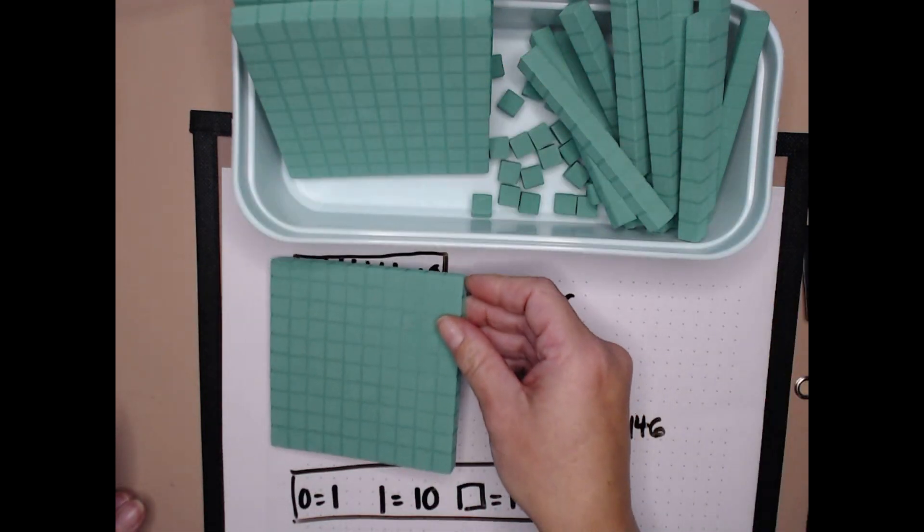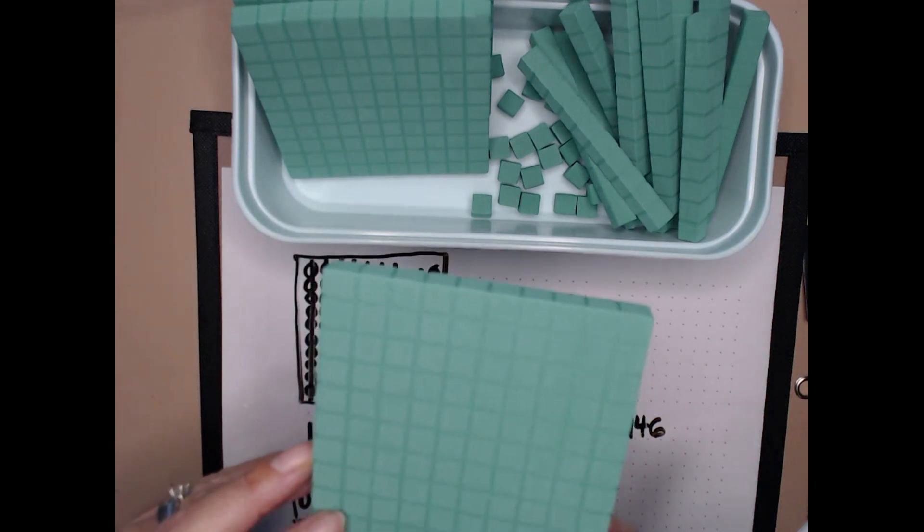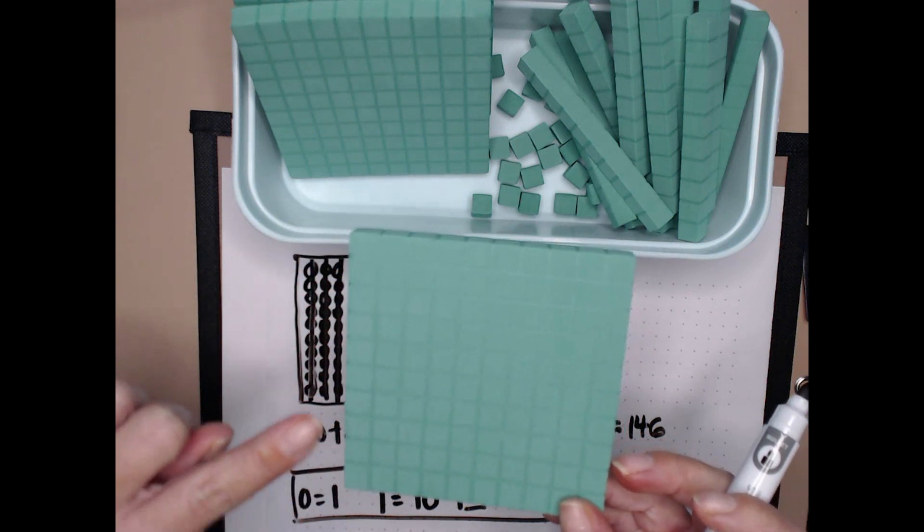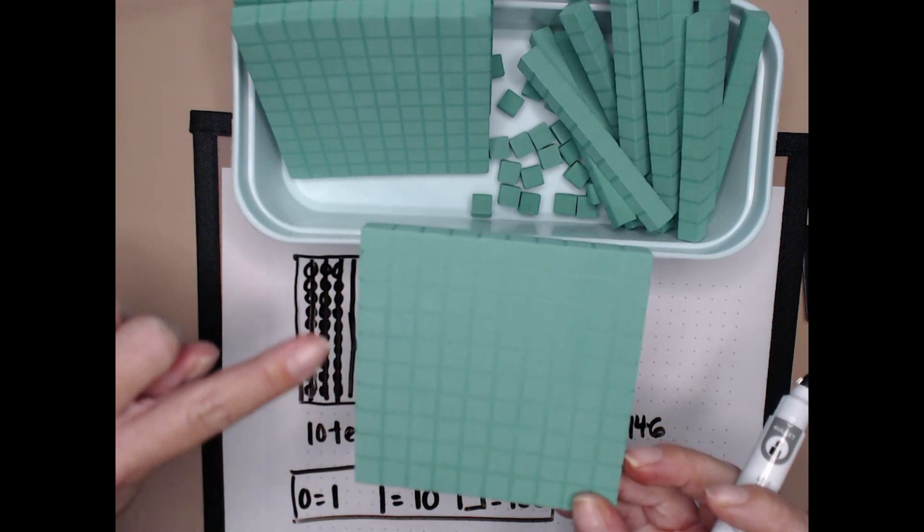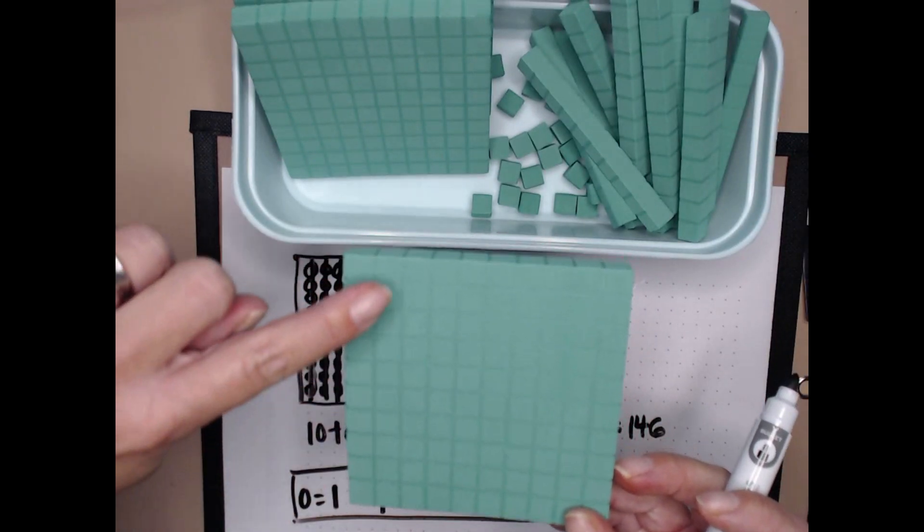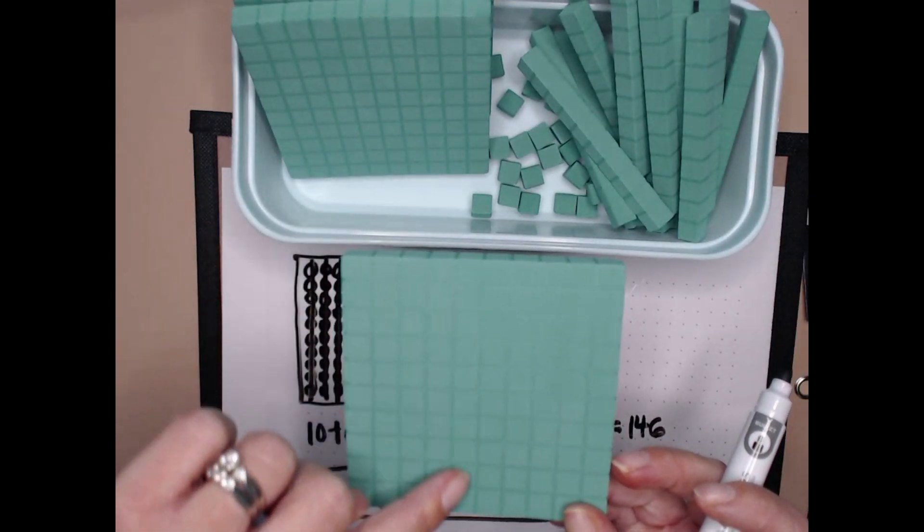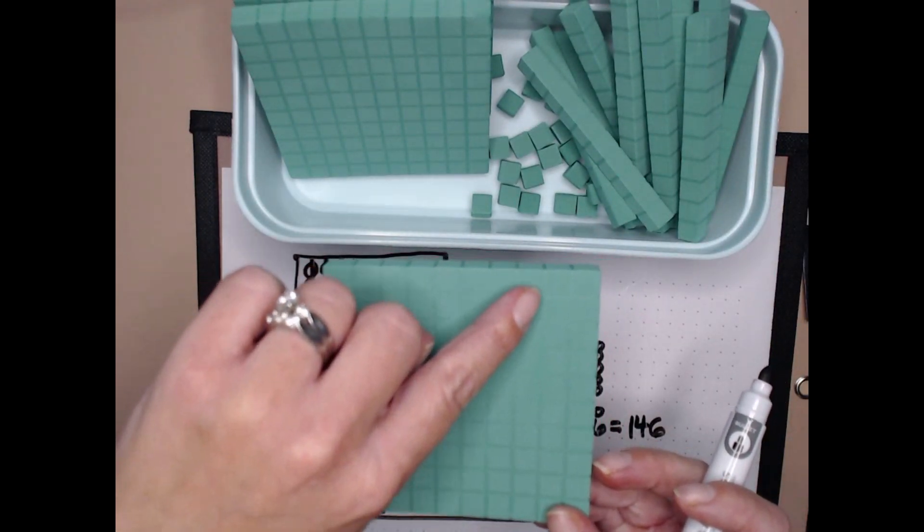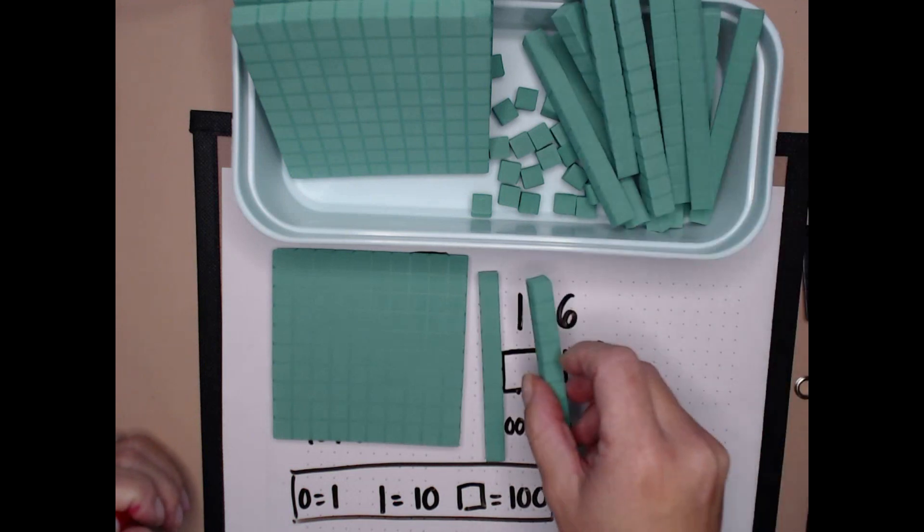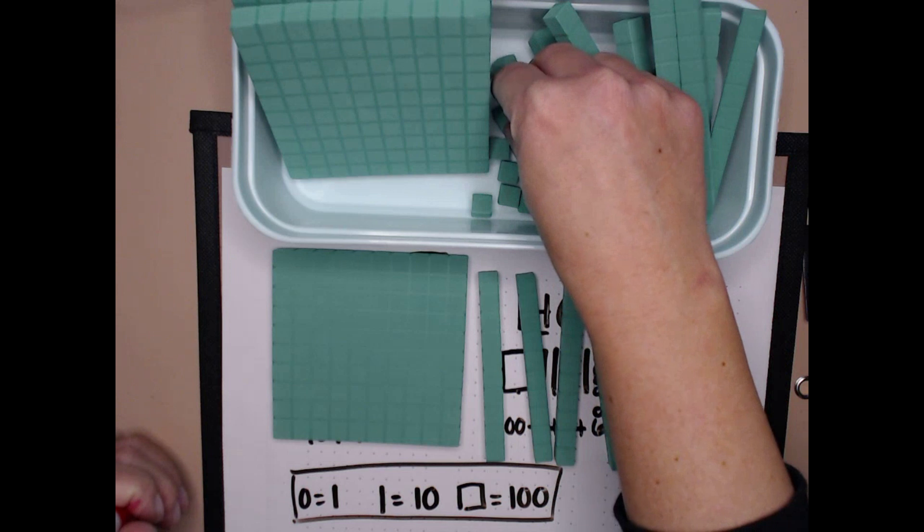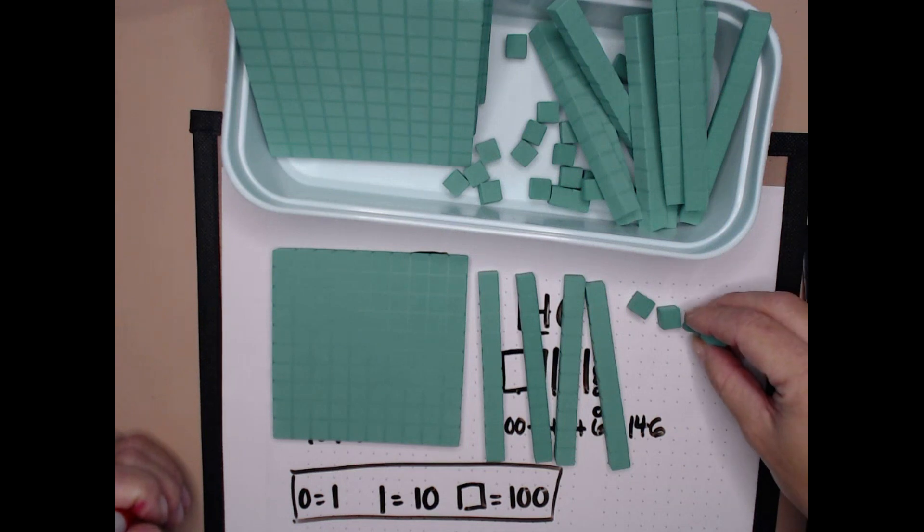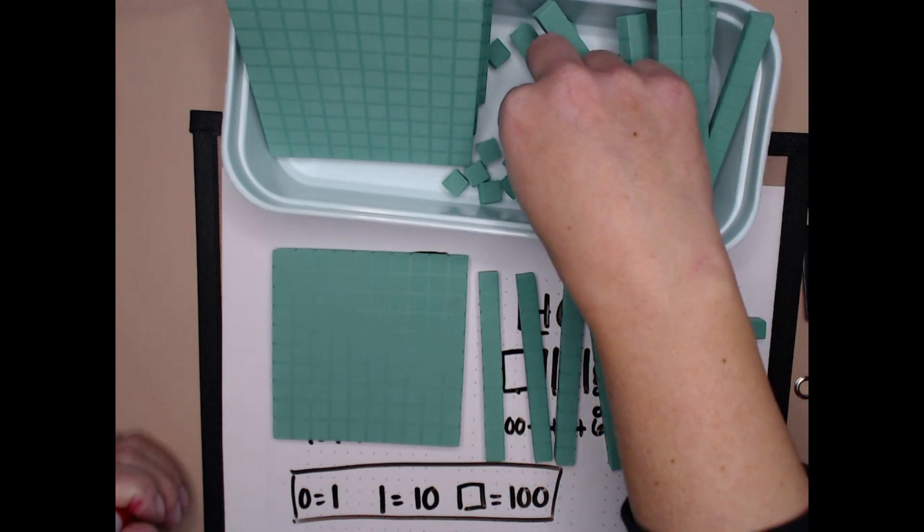So 140 plus 6 equals 146. It would be the same as 100, which if I look really closely, I can see all the individual ones. And if I counted each one of these, I would find that there's 100. If I want to go fast, I can do a quick 10. And I can see that it's 1, 2, 3, 4, 5, 6, 7, 8, 9, 10, 10, 20, 30, 40, 50, 60, 70, 80, 90, 100. So I have 100, 10, 20, 30, 40, 46. 1, 2, 3, 4, 5, and 6.